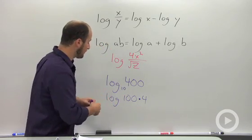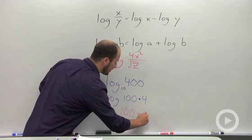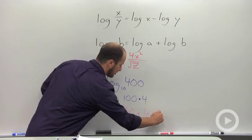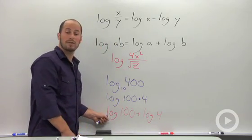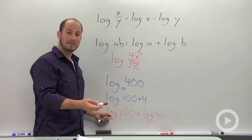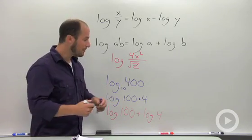This then becomes log 100 plus log 4. Log 100 we know: 10 to what power is equal to 100? That's just going to be 2. So this statement here is 2, and what we end up figuring out is this is equal to 2 plus log 4.